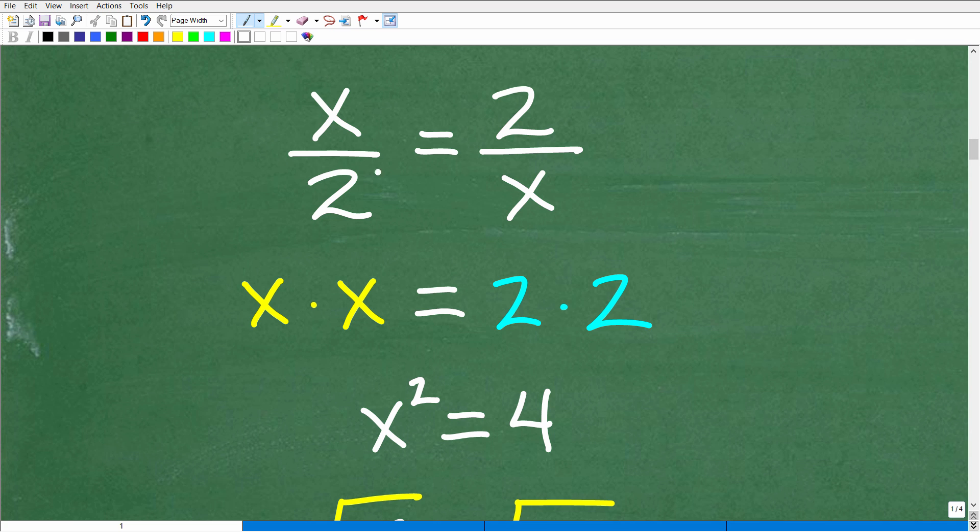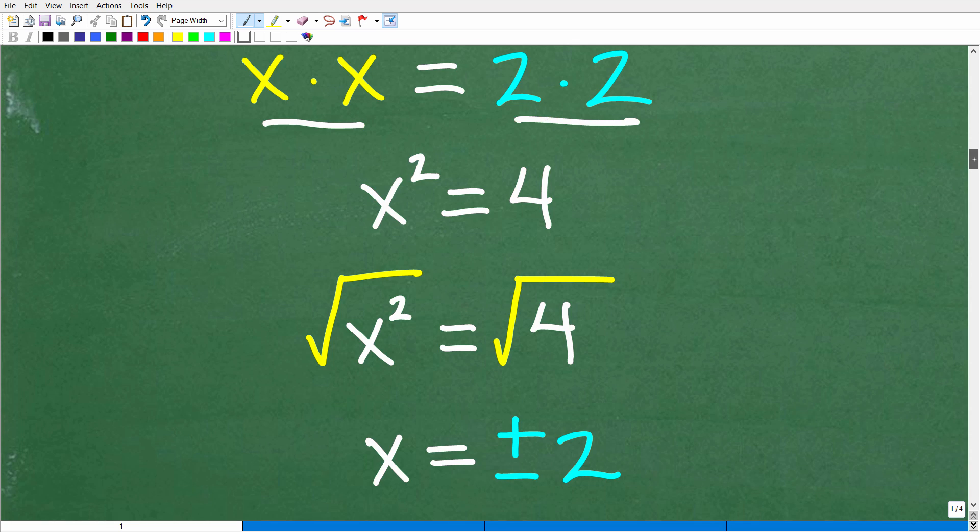This is what we want to keep in mind to solve this particular equation. I'm thinking about two equal fractions and the cross products, which means that the cross products are equal. So x times x right here is going to be equal to 2 times 2. x times x in algebra we would write that as x squared, and of course 2 times 2 is 4.